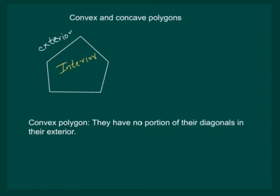It says that convex polygons have no portion of their diagonals in their exterior. Clearly, if we draw the diagonals from point A for this pentagon, we can see that AC and AD both diagonals lie in the interior of the pentagon.